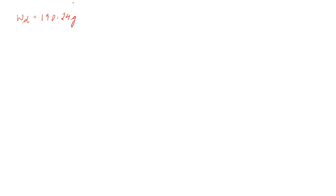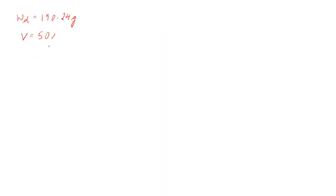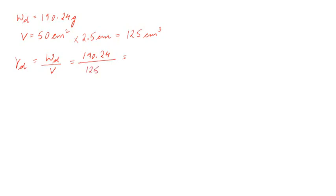Ws (dry weight) is 190.24 grams. Volume V = Area × Height = 50 cm² × 2.5 cm = 125 cm³. The dry unit weight γd = Wd / V = 190.24 / 125 = 1.52 g/cc.